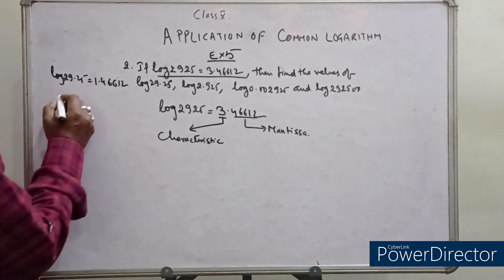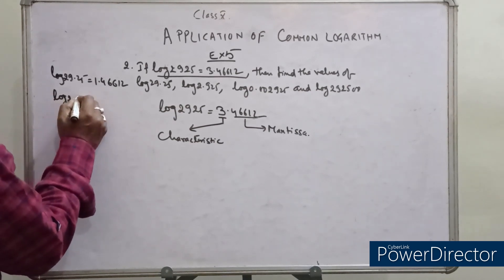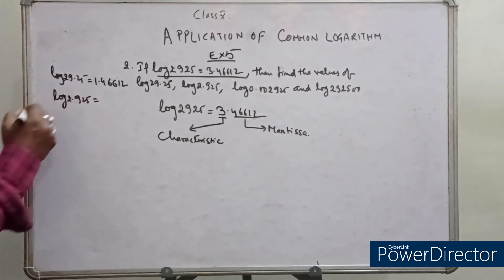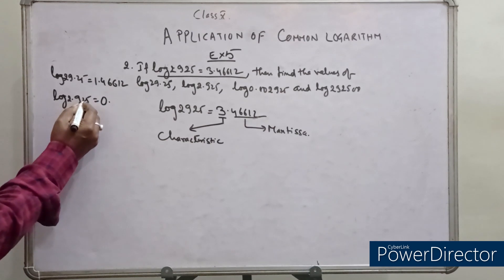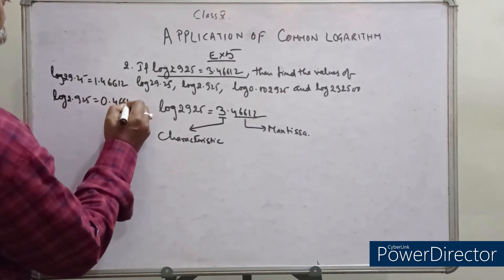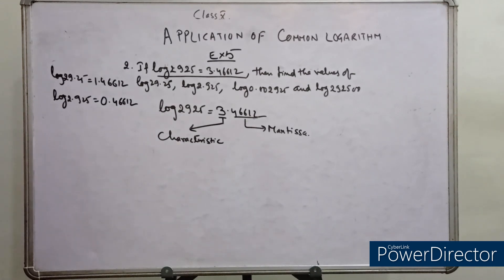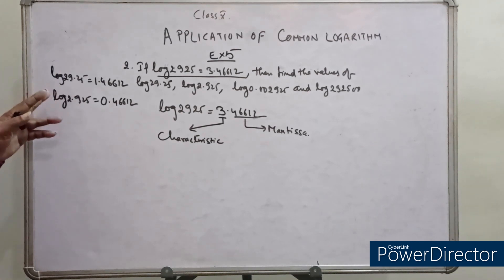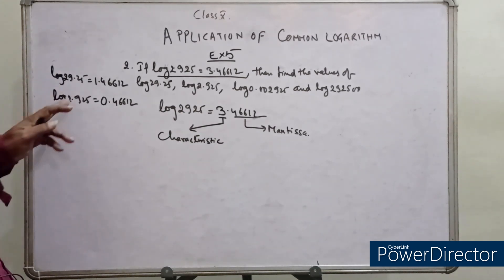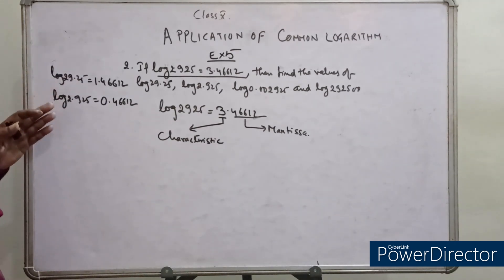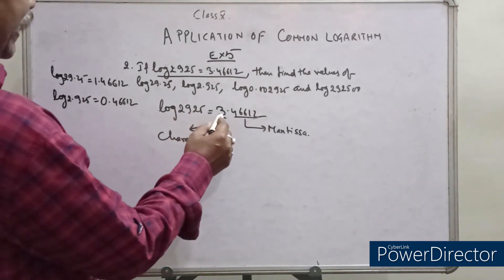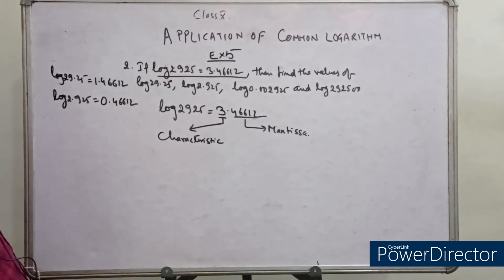The mantissa will remain constant at any time; only the characteristics will vary. For log 29.25, there are 2 digits before the decimal point, so 2 minus 1 equals 1 — the characteristics is 1. The mantissa for 2925 remains .46612. Remember, the decimal is not considered at all when finding the mantissa — decimal only plays a role in finding the characteristics.